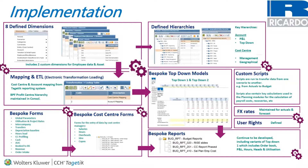We then added some customization — we had a couple of custom dimensions. This is really where the tool can be used to model and play around with it and come up with something that really fits your organization. Those bespoke dimensions for us contained things like our employees or our assets — things that were specific to the models we were developing.